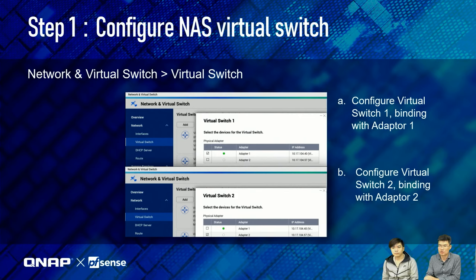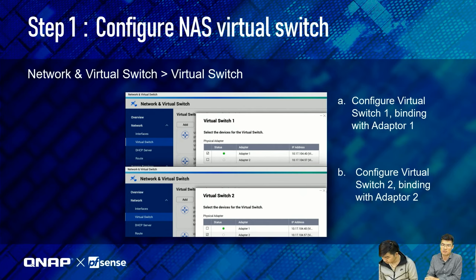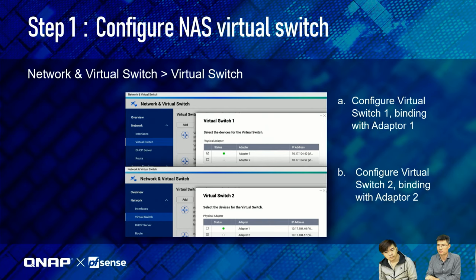Now let's start configuring. First, create two virtual switches: virtual switch 1 binding to adapter 1 (physical port 1), and virtual switch 2 binding to adapter 2 (physical port 2). The virtual switch is critical — it binds the physical ports to the PFSense interfaces.